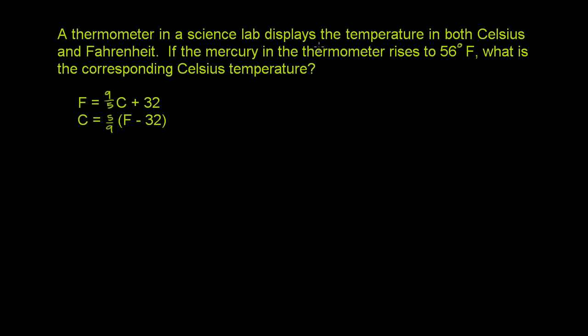A thermometer in a science lab displays the temperature in both Celsius and Fahrenheit. If the mercury in the thermometer rises to 56 degrees Fahrenheit — they're giving us the Fahrenheit temperature — what is the corresponding Celsius temperature?